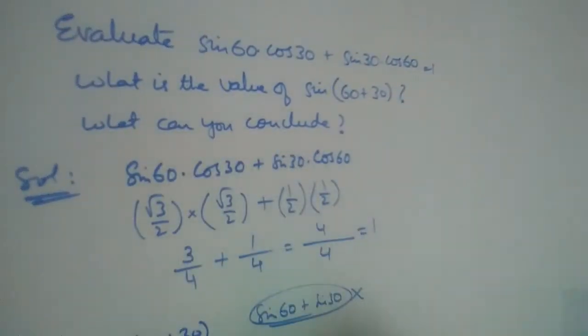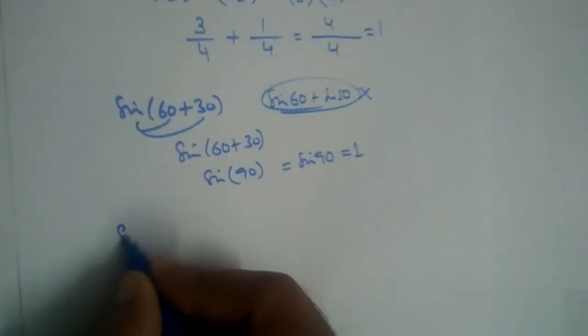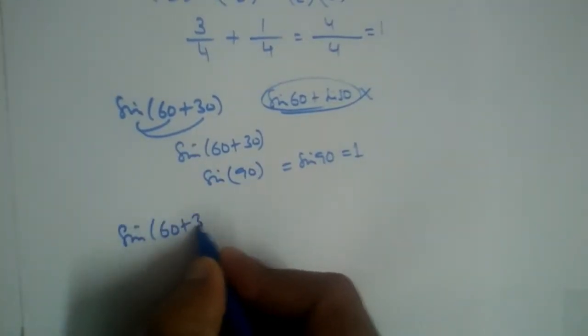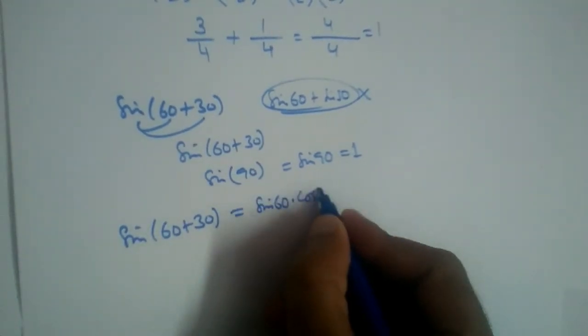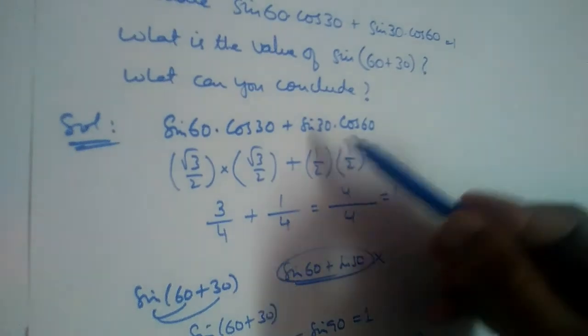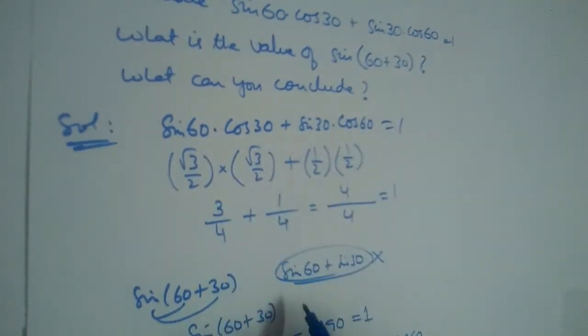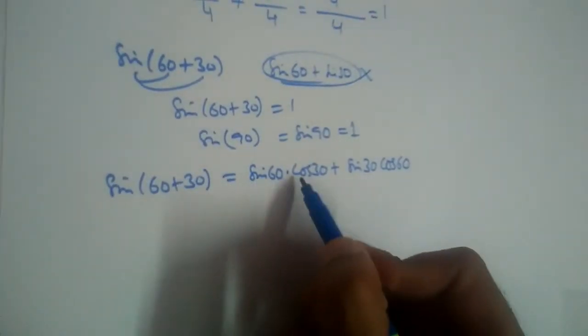So what can you conclude? We can conclude that sin(60 + 30) is equal to sin 60 cos 30 plus sin 30 cos 60, because these two values are equal—this is also equal to 1, this is also equal to 1.